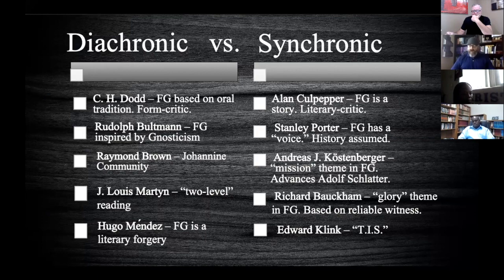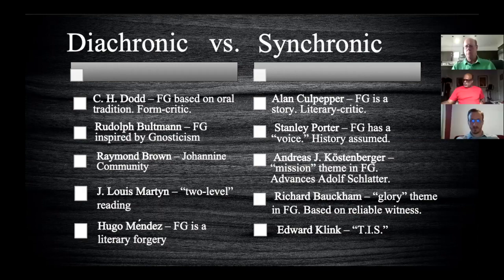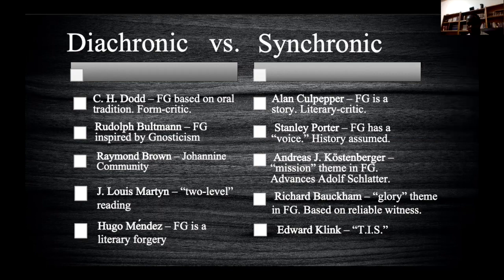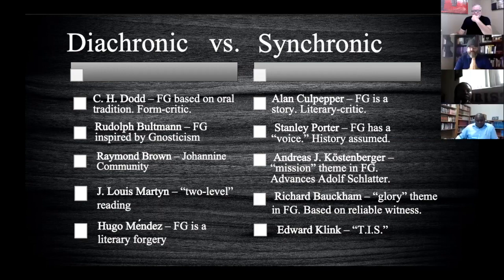The longevity of the Johannine school and community hypotheses may be due to them being believed to offer a via media — a middle position for the provenance of the Fourth Gospel — between defenders of apostolic authorship on one side (the more evangelical perspective) and critics who maintain the Gospel was written at a later date and certainly not by the Apostle John. Though largely abandoned by today's scholars, the Johannine school and community theories still loom large over critical scholarship, so much so that overcorrections are now being made.